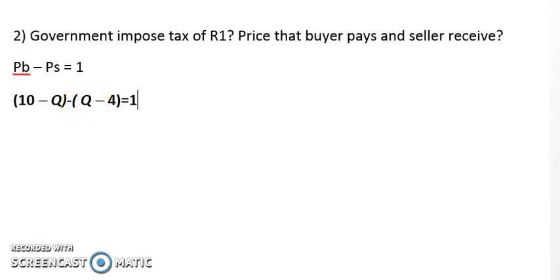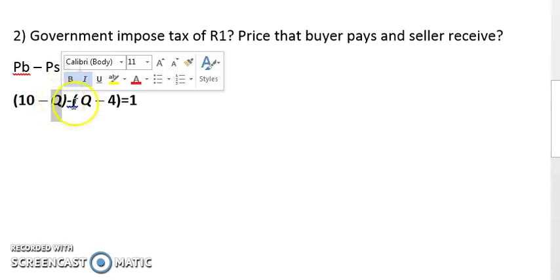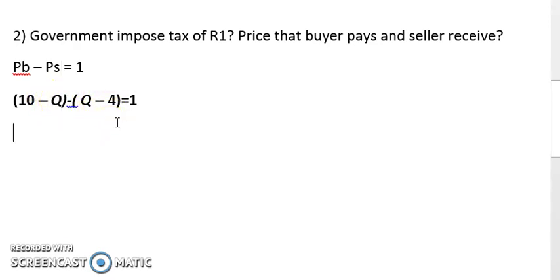Now we can calculate the quantity that will be sold within the market because we can now solve Q. So we say 10 minus Q equals 1 plus Q minus 4.